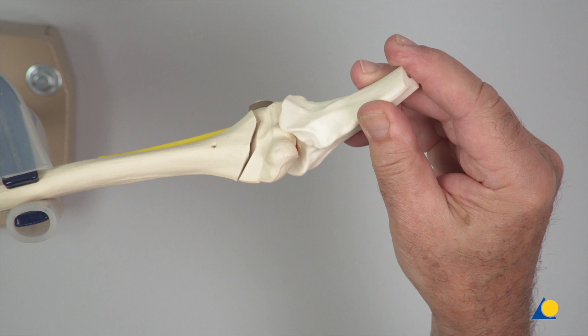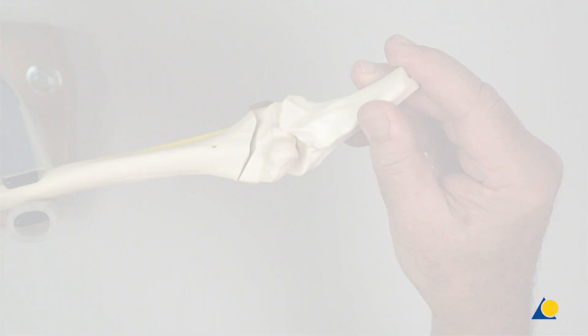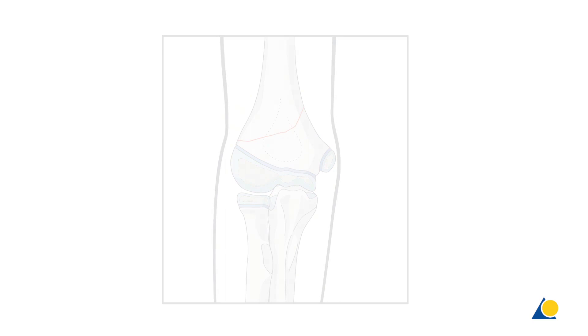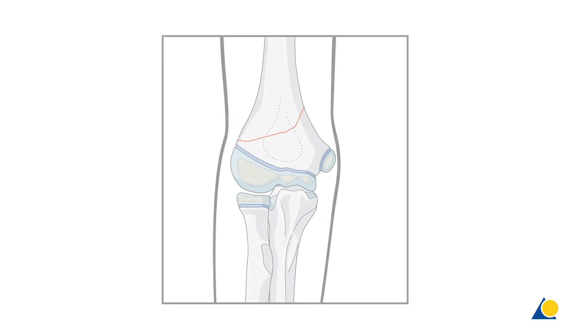This fracture may occur in a young patient with strong bone. Shear forces lead to an oblique separation of the metaphysial articular block from the shaft. The obliquity of the fracture plane can be directed either obliquely downward and medially or obliquely downward and laterally.